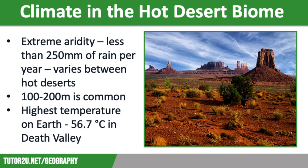Let's take a look at the climate in the hot desert biome. Hot deserts are extremely arid with less than 250 millimetres of rainfall per year. Annual precipitation totals are extremely low and also unreliable. There are some parts of the Atacama Desert in Chile where it hasn't rained for 400 years, whereas other areas may only receive one millimetre of rainfall per year. Usually hot deserts receive around 100 to 200 millimetres of precipitation annually.